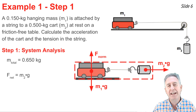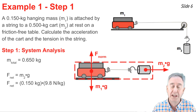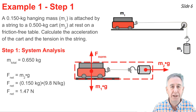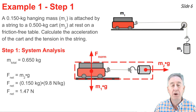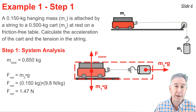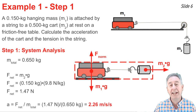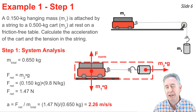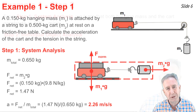We have three forces — two balance, and M2G is the net force. So F_net = M2G = 0.15 × 9.8 = 1.47 N. The total mass is 0.650 kg. Using Newton's second law, acceleration = F_net / m = 1.47 / 0.650 = 2.26 m/s².